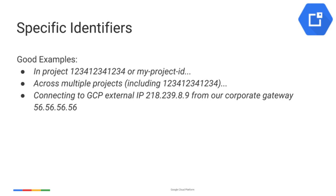IP addresses are another form of unambiguous identifier. When specifying a Cloud Platform IP, tell us the context of how it's used — for example, if it's connected to a GCE instance, a load balancer, a custom route, or if it's an API endpoint. If you're troubleshooting a connection issue, tell us about the IP addresses that are not part of GCP, for example if it's your home internet, a VPN endpoint, or an external monitoring system.